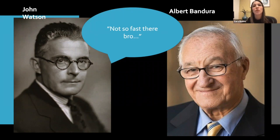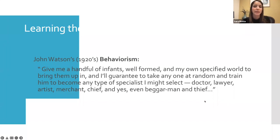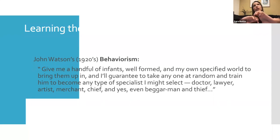John Watson was at the extreme of behaviorism — he believed the environment was completely responsible for psychological growth. His famous quote: 'Give me a handful of infants in my own specified world to bring them up in, and I'll guarantee to take anyone at random and train him to become any type of specialist I might select — doctor, lawyer, artist, merchant, chief, and yes, even beggar man and thief.' This exemplifies his belief that nature, genetics, and predispositions didn't matter — only the environment determines who you become.